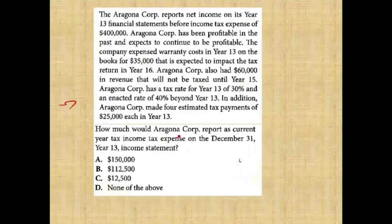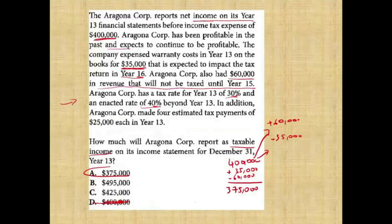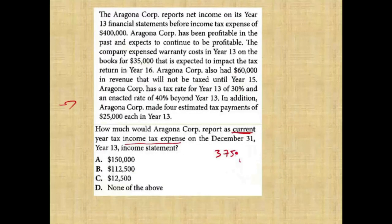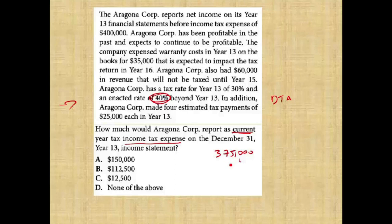How much would Aragno Corporation report as current income tax expense? They're asking for current income tax expense — what should be their income taxes payable. Taxable income is $375,000. The current year tax rate is 30%, so current income tax expense equals $375,000 times 30% equals $112,500. The answer is B. Be careful — the 40% future enacted rate is used for computing the deferred component, not the current.